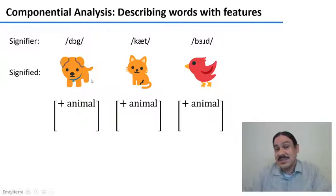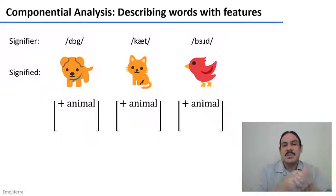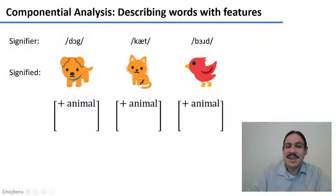This is a good feature because it describes them, but it doesn't help us distinguish between them. So why don't you try to come up with a feature system that could help us distinguish between dog, cat, and bird? Propose a few features.